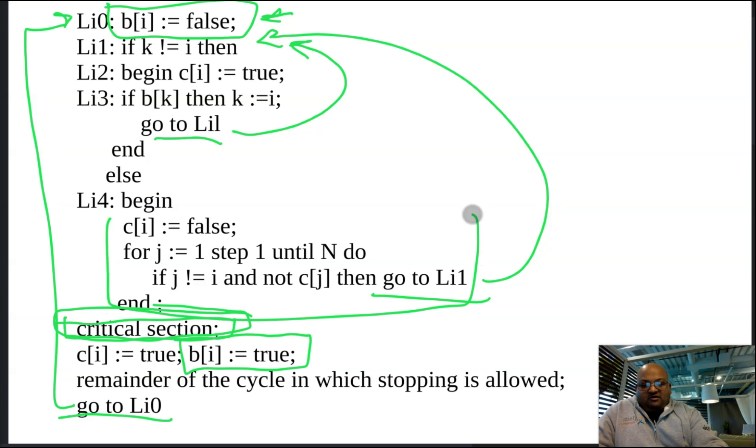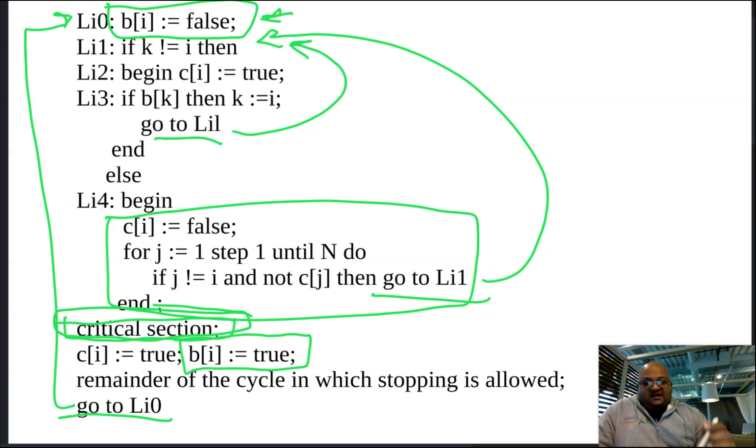This piece of code is basically checking that my C, my C of I for this process is false, and that everyone else's C of I is true. And only if that condition holds, we enter the critical section. So C of I is a marker for being in the critical section. Now let's see if we can rename some of these variables and try to make this piece of code a little bit more understandable.